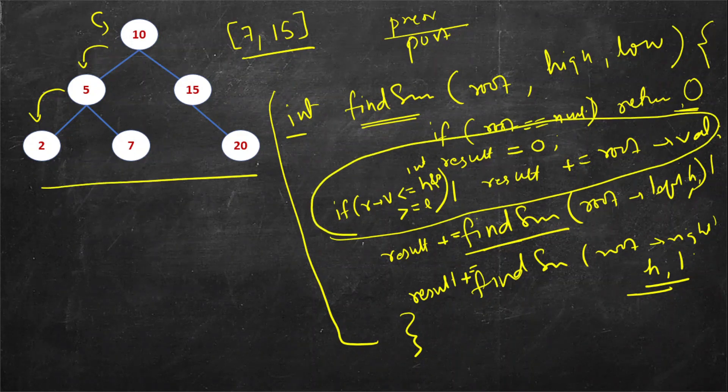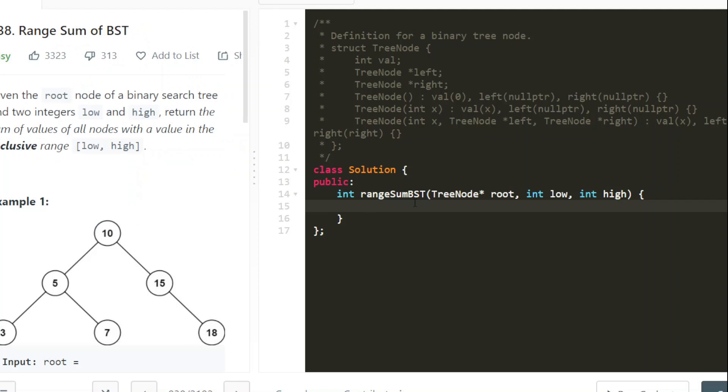In the end when this traversal completes you would have accumulated all the values having values in that range. Now let's write the code for this. If root val is less than equal to high and root val greater than equal to low then result plus equal to root val. Result plus equal to the same function.